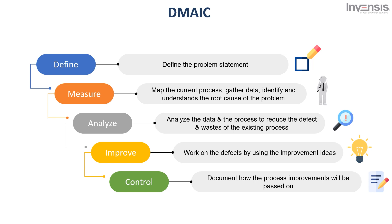The five DMAIC project phases are: Define — the team defines the problem statement. Measure — the team maps the current process, gathers data, and identifies and understands the root cause of the problem. Analyze — the team analyzes the data and the process to reduce defects and waste. Improve — once data and process are analyzed, the team works on defects using improvement ideas. Control — in the final phase, the team documents how the process improvements will be passed on to the employees who work within that process.